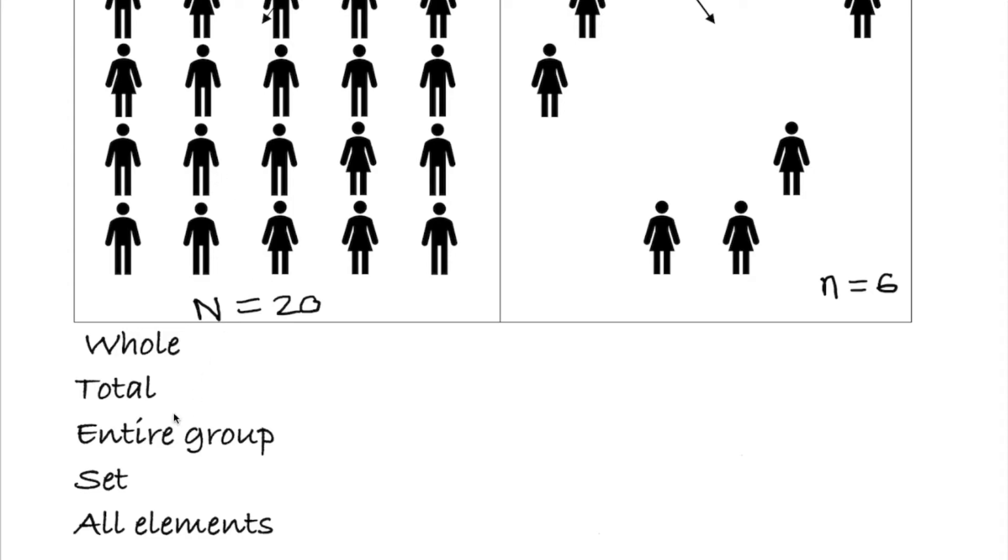So these are basically telling us this is a population, whole everything, total everything, entire group everything, set whole thing, all elements every member.